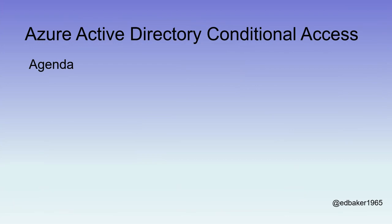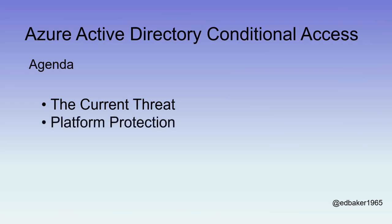The agenda for this 50-minute session is to talk about the current threat to our identities and our data. We're going to look at our platform protection — the Azure Active Directory protection we have, not just Conditional Access, but the basic protection we have and how we get our identities from on-premises into Azure. Finishing off with Conditional Access and a demonstration of some of its features.